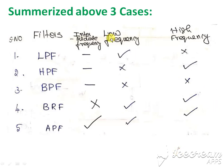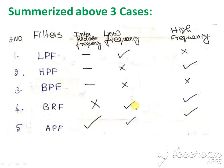To identify the filter type, we check two cases: low frequency and high frequency. If low frequency is allowed, the filter is called a low pass filter. If higher frequency is allowed, the circuit is called a high pass filter. If both low and high frequencies are not allowed, the filter circuit is called a band pass filter.